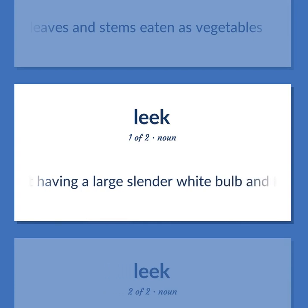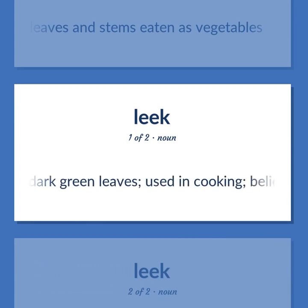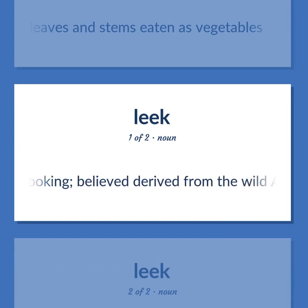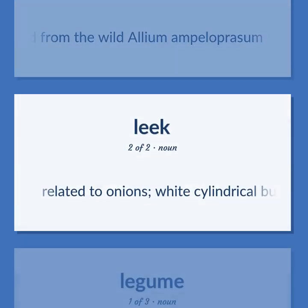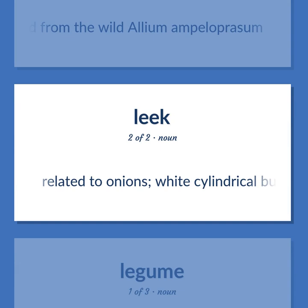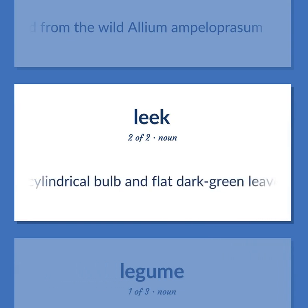Leek: A plant having a large slender white bulb and flat overlapping dark green leaves, used in cooking. Believed to be derived from the wild Allium ampeloprasum, related to onions, with a white cylindrical bulb and flat dark green leaves.